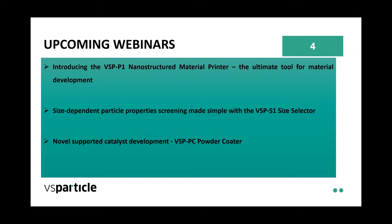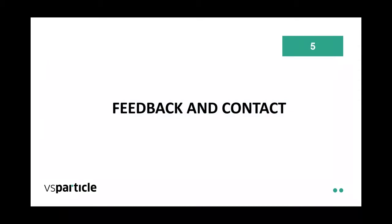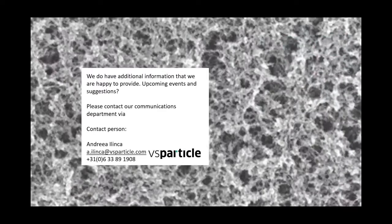The first upcoming session is introducing the VSP-P1 nanostructure material printer — the ultimate tool for material development. Then size-dependent particle property screening made simple with the VSP-S1 size selector, and novel supported catalyst development with the VSP-PC powder coder, which is the latest addition to our product portfolio. We have additional information we're happy to provide, so if you would like to receive a mailing or register for future webinars please get in touch with us. We would like feedback from you as this will help us understand how we can best support your research. If you have questions or webinar topics you would like to suggest, you can always reach us via our communications department.